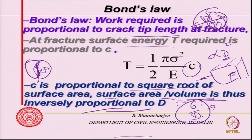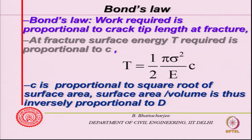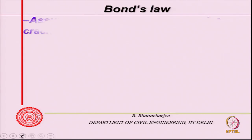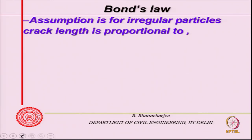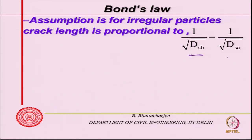Smaller the D, more surface area per unit volume. So surface area is inversely proportional to D - smaller D means more surface area per unit volume. His law comes from this kind of concept: assuming it is for irregular particles, crack length is proportional to 1/D to the power SB before N.